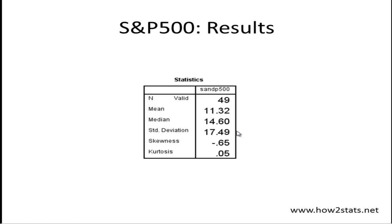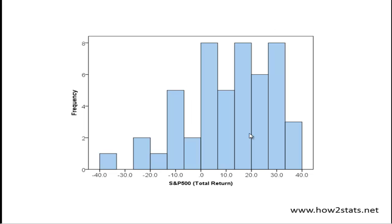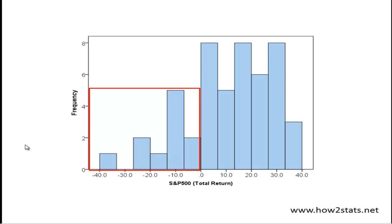And that's how some people would describe the stock market. Here's the distribution of stock market returns on an annual basis. You can see that it ranges from close to negative 40% up to as high as 40%. This whole section here is associated with negative returns — just on an annual return basis. It comes out that 21% of years you get a negative return from the S&P 500 based on these data.